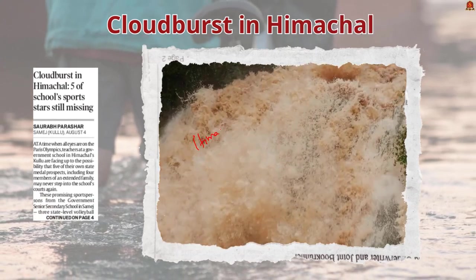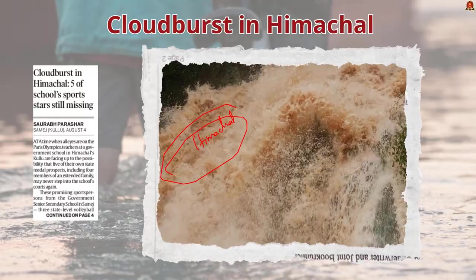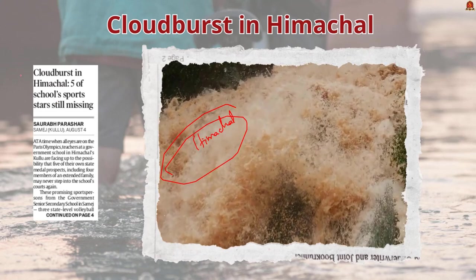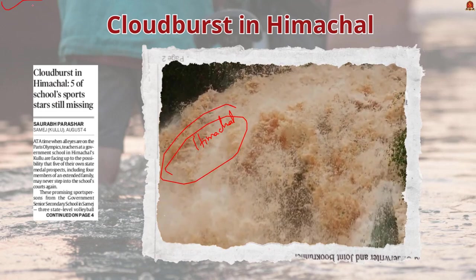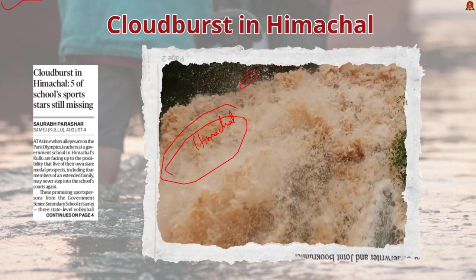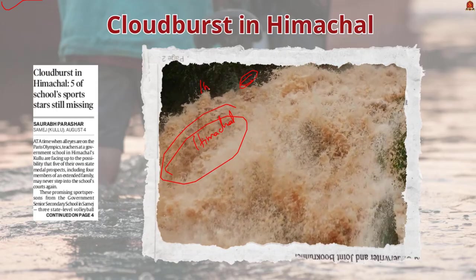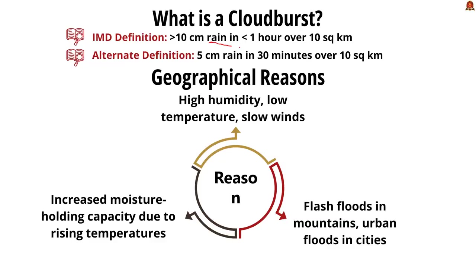Make note of this news — you can use it in your mains answer writing for the substantiation part. According to the India Meteorological Department (IMD), a cloudburst is a sudden heavy rainstorm where more than 10 cm of rainfall occurs in less than an hour over a small area of about 10 square kilometers. By this definition, even 5 cm of rainfall in an hour over the same area would be categorized as a cloudburst.